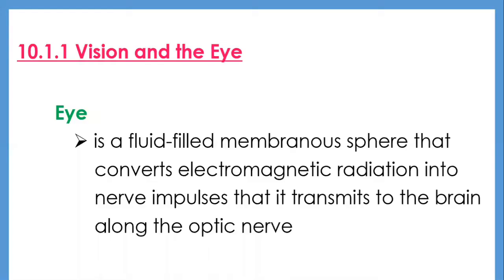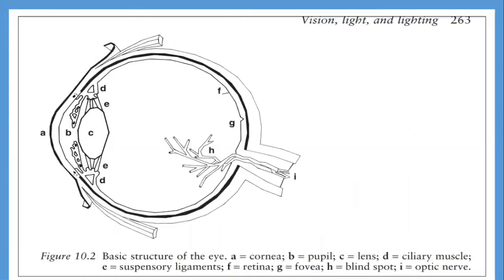Let me introduce to you vision and the eye. The eye is a fluid-filled membranous sphere that converts electromagnetic radiation into nerve impulses that it transmits to the brain along the optic nerve. As you can see in Figure 10.2, light enters through a transparent outer covering called the cornea, indicated as letter A in the figure.